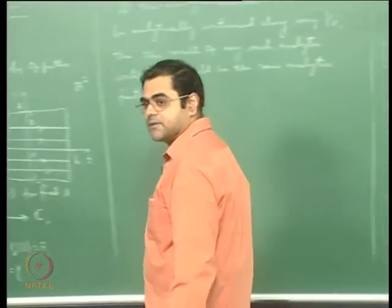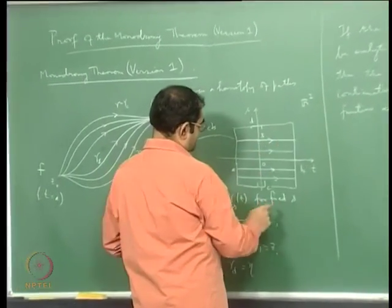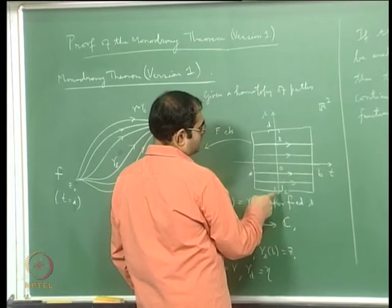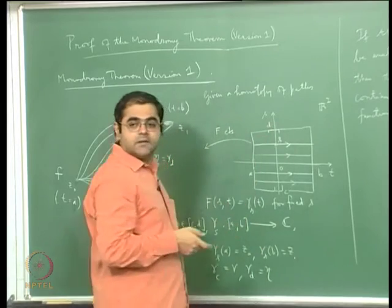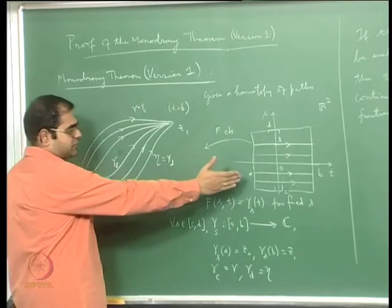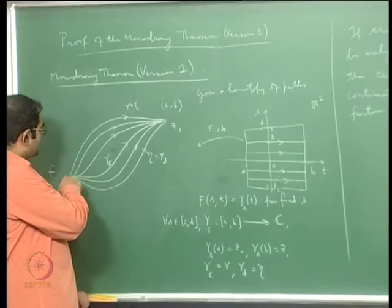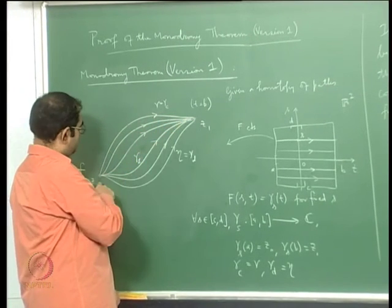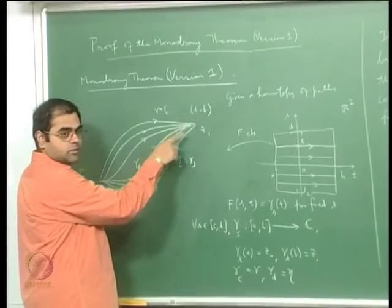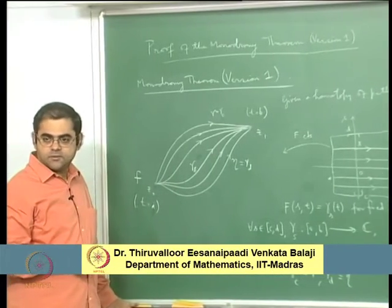So, we continue with the proof of the monodromy theorem. We have this rectangle which is the product of the closed interval [a,b] on the real line with the closed interval [c,d] on the real line. And we have a homotopy capital F, which is a continuous function on this rectangle. It gives a homotopy between the path gamma, which is the beginning path, and the path eta, which is the terminal path of the homotopy.